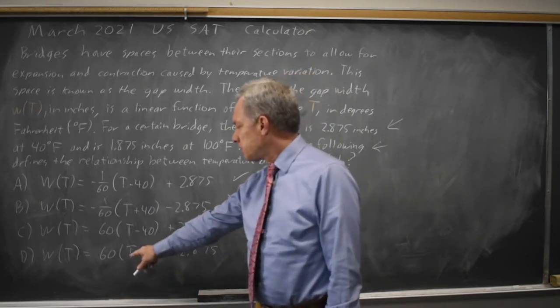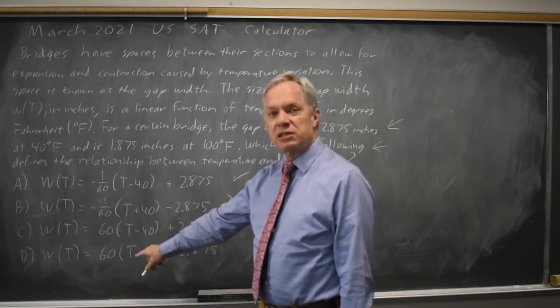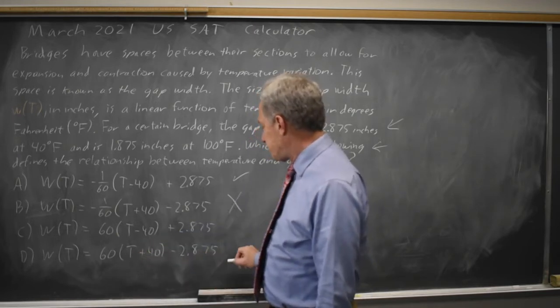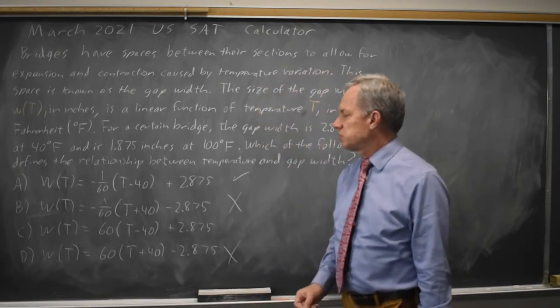And similarly down here, 40 plus 40 is 80 times 60, gives me a huge number minus 2.875, which is still a huge positive number. So choice D will not match that first point.